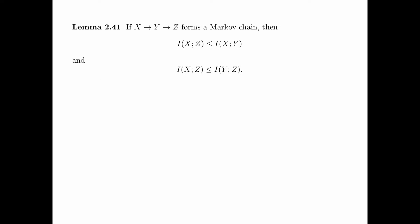The next lemma says that if X, Y, Z forms a Markov chain, then I(X; Z) is less than or equal to I(X; Y), and I(X; Z) is less than or equal to I(Y; Z). In other words, if the random variables are closer on the Markov chain, then they have higher mutual information.